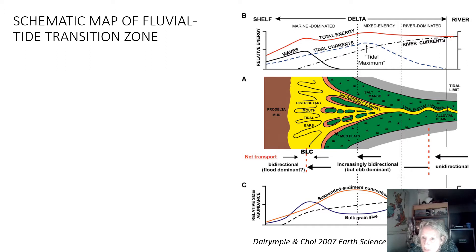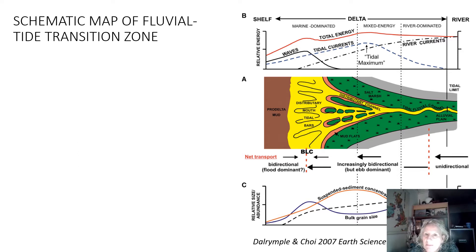Within the distributive channels of the delta, we see a mixed energy system with what is known as the tidal maximum, where there is a concentration of tidal currents due to the funnel shape of the estuary environment. The fluvial system and tidal currents interact, with high suspended sediment load due to the mix of salinities. Further out into the outer distributive mouth tidal bars, wave interaction winnows the tops of the sandbars, alongside tidal currents and some river currents during high fluvial events.